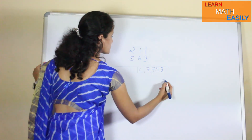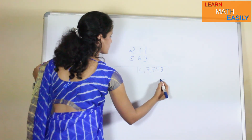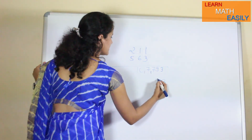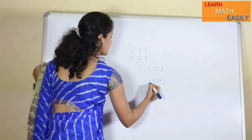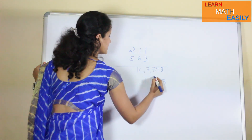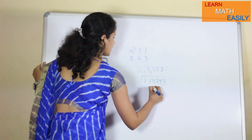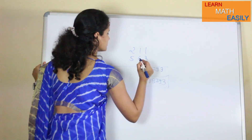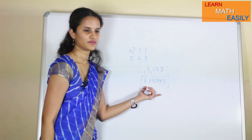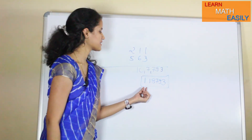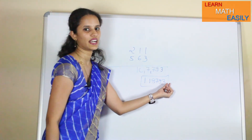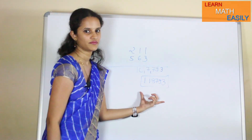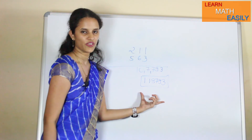Adding these terms with carry-overs, you get the digits 3, 9, 7, 8, 1, 1, giving the final answer 118793.